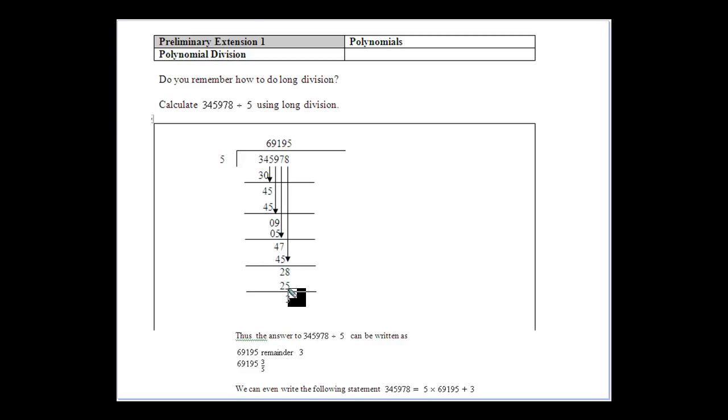5 goes into 28 five times, so we put our 5 up there, and 5 fives of 25 gives us what we call a remainder of 3. Now we've got nothing else, we can get decimals if we want to, but we can write it as a fraction as well.